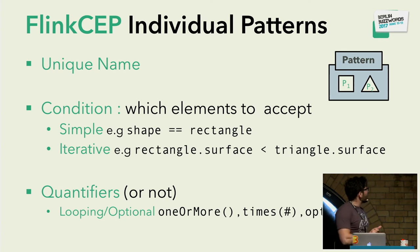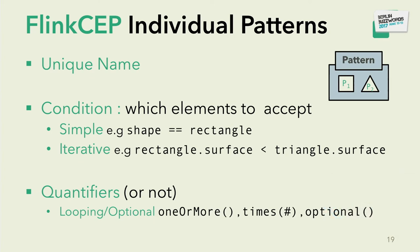For individual patterns, first they must have a unique name — this is how the library returns results. They can have a condition based on which they accept elements. We have simple conditions, such as 'shape equals rectangle,' where accepting or rejecting an event depends only on properties of the event itself. We also offer iterative conditions where the decision depends on properties of previously accepted events — for example, accept the next triangle only if its surface is bigger than the previously accepted rectangle.